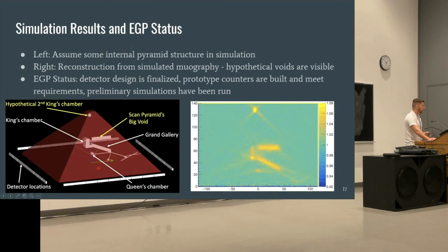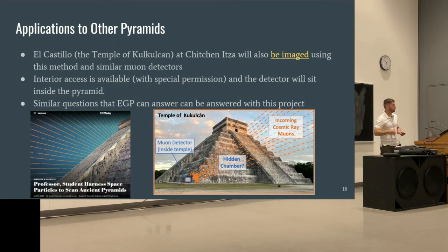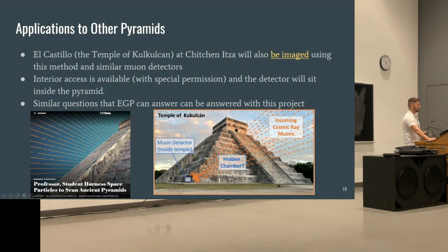In addition, we're going to do something similar to El Castillo, the temple at Chichen Itza, which will also be imaged using this method with very similar muon detectors. The real difference there is that the detector can actually be placed inside the pyramid since there is access, and similar questions that EGP can answer will also be addressed with this project.